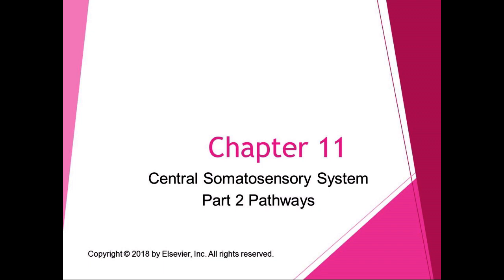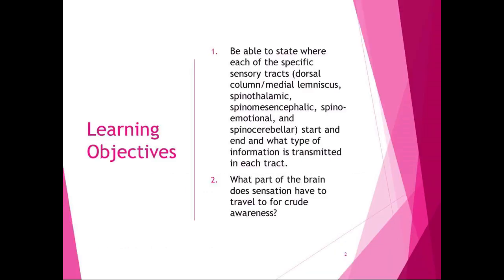In the first part of chapter 11 we briefly introduced the conscious relay pathways, the divergent pathways, and the non-conscious relay pathways. In this part we're going to talk about them in more detail and the individual spinal tracts that run in those pathways. You should be able to state where each of the specific sensory tracts start and end: the dorsal column medial lemniscus, the spinothalamic, spinal mesencephalic, spinal emotional, and spinal cerebellar tracts, and what type of information is transmitted in each tract.